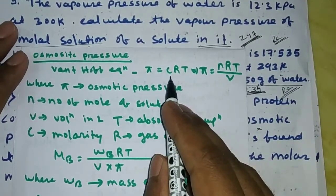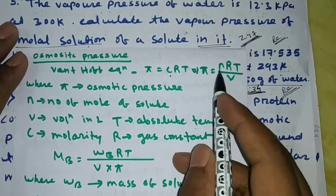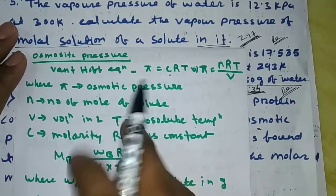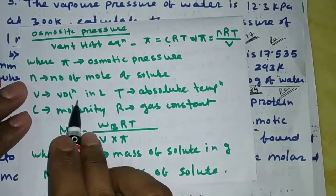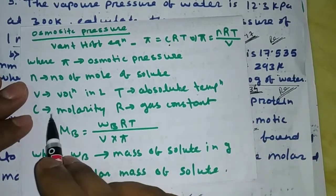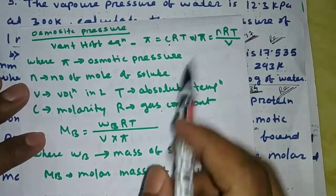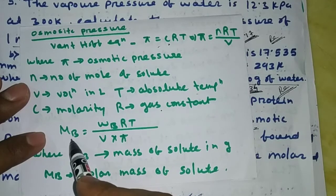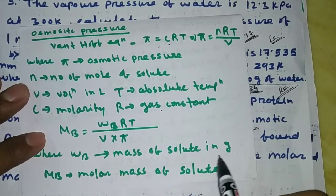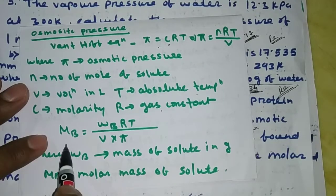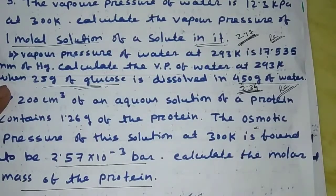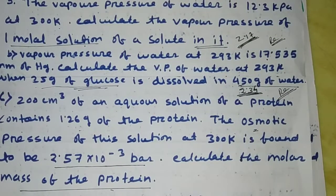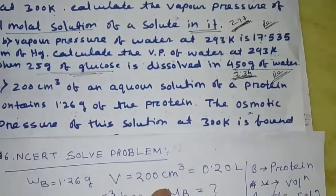Pi is equal to c into RT, where c is the molarity of the solution. Molarity is N divided by V — the number of moles of the solute divided by the volume of the solution — into RT. Pi is the osmotic pressure, N is the number of moles of solute, V is the volume in liters, T is the absolute temperature, R is the gas constant. Where W is the mass of the solute in grams and M is the molar mass of the solute, this equation gives us the molar mass of the solute.